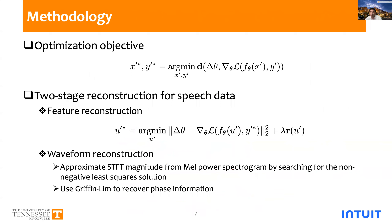In general, gradient inversion attacks can be seen as attempting to generate carefully crafted dummy data to match the target gradient, and this can be achieved by minimizing the distance between the dummy gradient and the target gradient. For speech data, it is common that the raw speech signal is first processed into acoustic features such as mel spectrogram or MFCC, and then fed into the neural network.